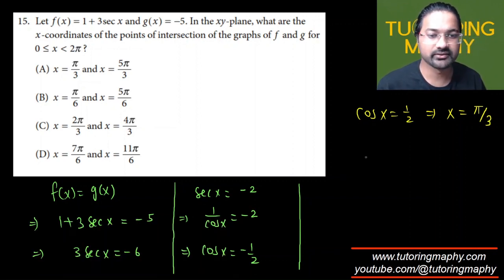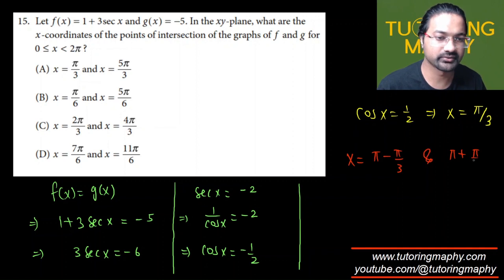But I need the answer in quadrant 2. So that's going to look like pi minus pi over 3, which is in quadrant 2. And pi plus pi over 3, which is in quadrant 3. So this is going to look like 2 pi over 3 and 4 pi over 3. So it's 2 pi over 3 and 4 pi over 3.